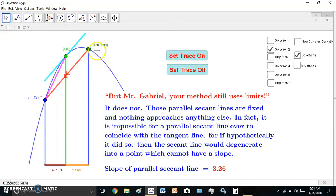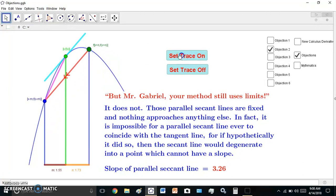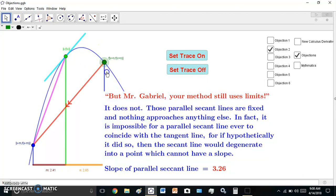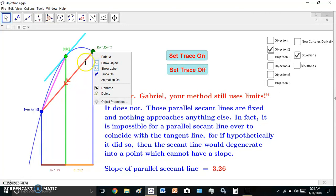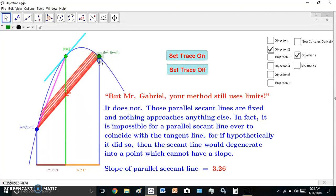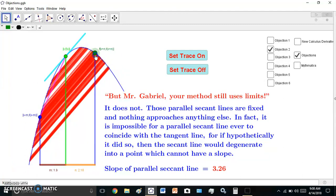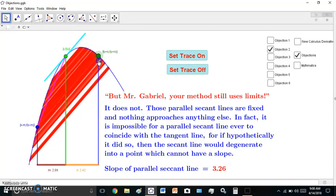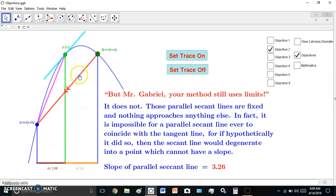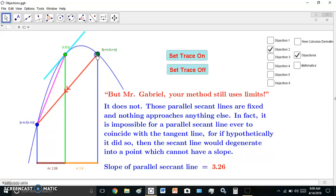And of course, if we set this trace, you'll see. For some reason, whenever you're demonstrating something... Well anyway, the trace was supposed to show you that all these lines are here. See? It doesn't matter where you are. They're always there. Nothing's approaching anything else. For some reason, this isn't working and I'm not going to waste my time on it. But that takes care of that objection, because you can't have this parallel line degenerating into a point.